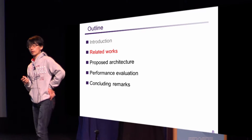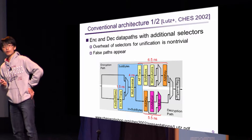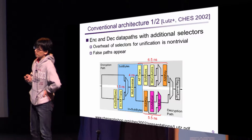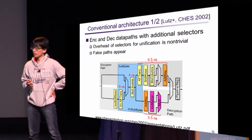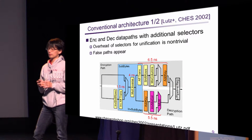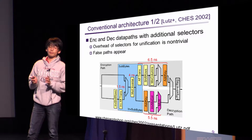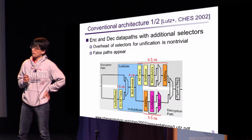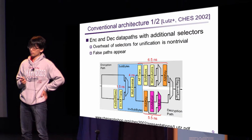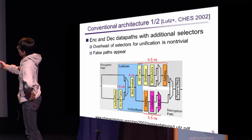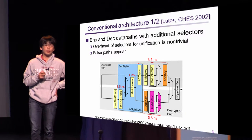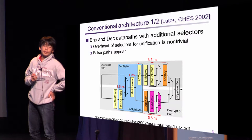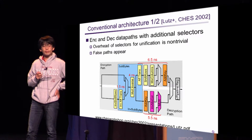Now I show some related works. Let me show two previous and representative approaches to designing unified AES hardware architecture. This is the first approach by Ratz et al. This architecture has two distinct data paths for encryption and decryption, and we select either path using selectors. To design a unified AES hardware architecture in an efficient manner, it's very important to unify resource-consuming components. In this architecture, the inversion circuit in SubBytes and InvSubBytes is unified. However, there is an additional multiplexer prior to inversion. Please note such a multiplexer is non-trivial for standard cell-based design.